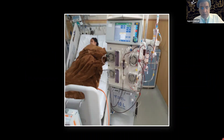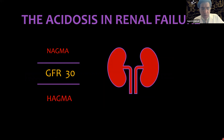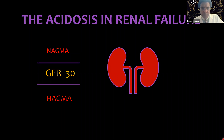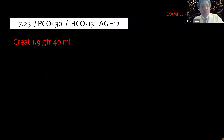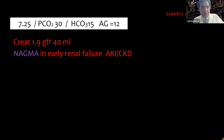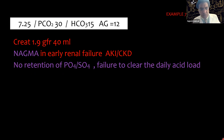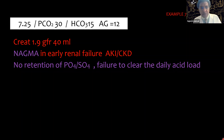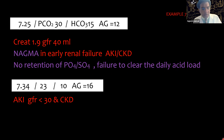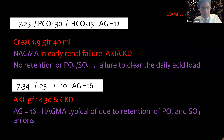Coming to renal failure: above a GFR of 30, metabolic acidosis is normal anion gap (NAGMA). Below a GFR of 30, it transitions to high anion gap acidosis (HAGMA). This is because the anions — phosphate and sulfate — are not retained in the early stages of renal failure; it is their retention as GFR worsens that leads to high anion gap metabolic acidosis.